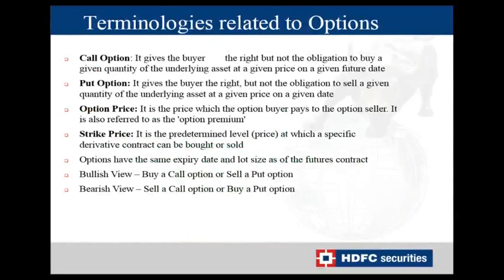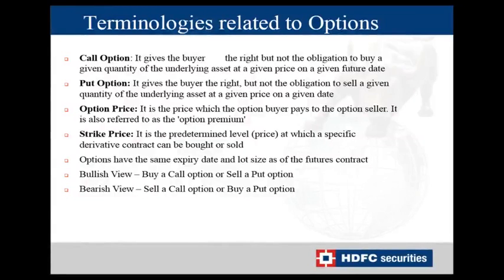The basic terminology related to options: there are two kinds of options — call and put. The call option gives the buyer the right but not the obligation to buy a given quantity of the underlying asset. The put option gives the buyer the right but not the obligation to sell a given quantity of the underlying asset. The price the buyer pays to the seller is known as the premium. Strike price is the predetermined level at which a specific derivative contract can be bought or sold. Options and futures have the same lot size and the same expiry. If you have a bullish view, you can buy a call option or sell a put option. If you have a bearish view, you can sell a call option or buy a put option.